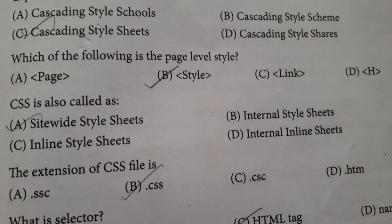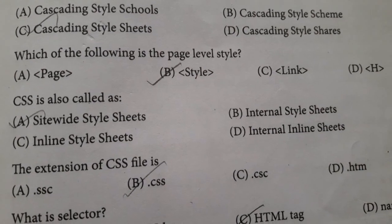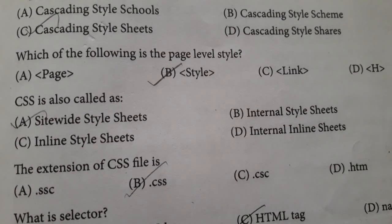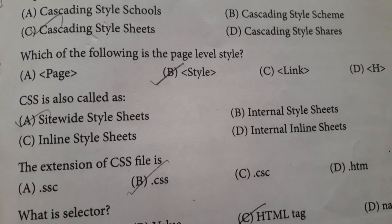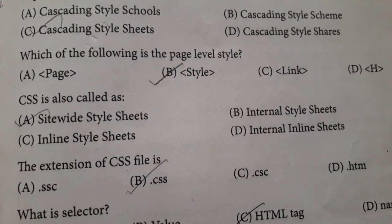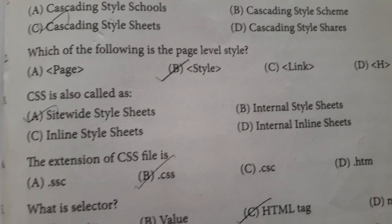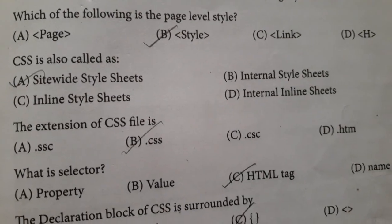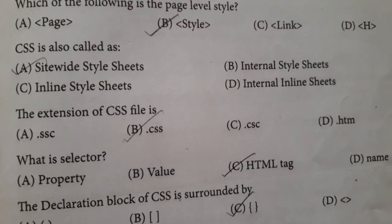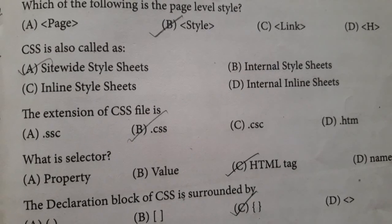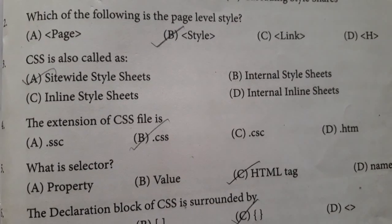Question number two: which one of the following is a page level style? Option A: page. Option B: style. Option C: link. Option D: H. Answer is option B: style.